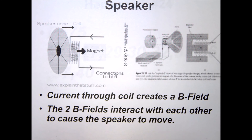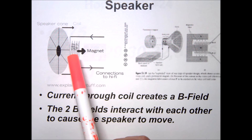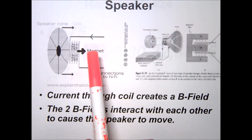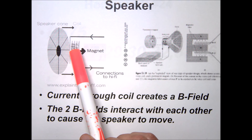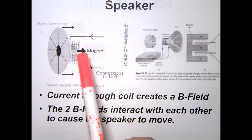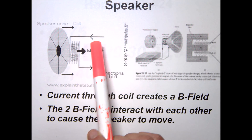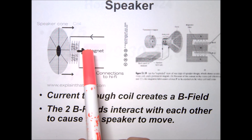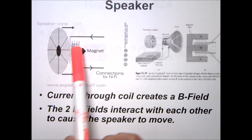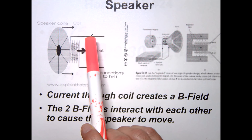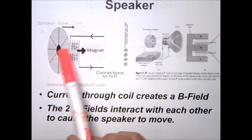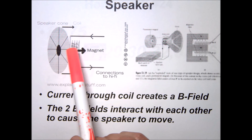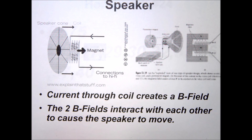The second application is a speaker. Inside a speaker you have a coil of wire and a permanent magnet. Sending current through the coil creates a force on the wire. By reversing the current you reverse the force direction, causing the cone to vibrate back and forth. When this vibration is tuned to the desired sound or music, it produces the sound waves you hear. Real-life examples of both the motor and speaker will be shown next time.